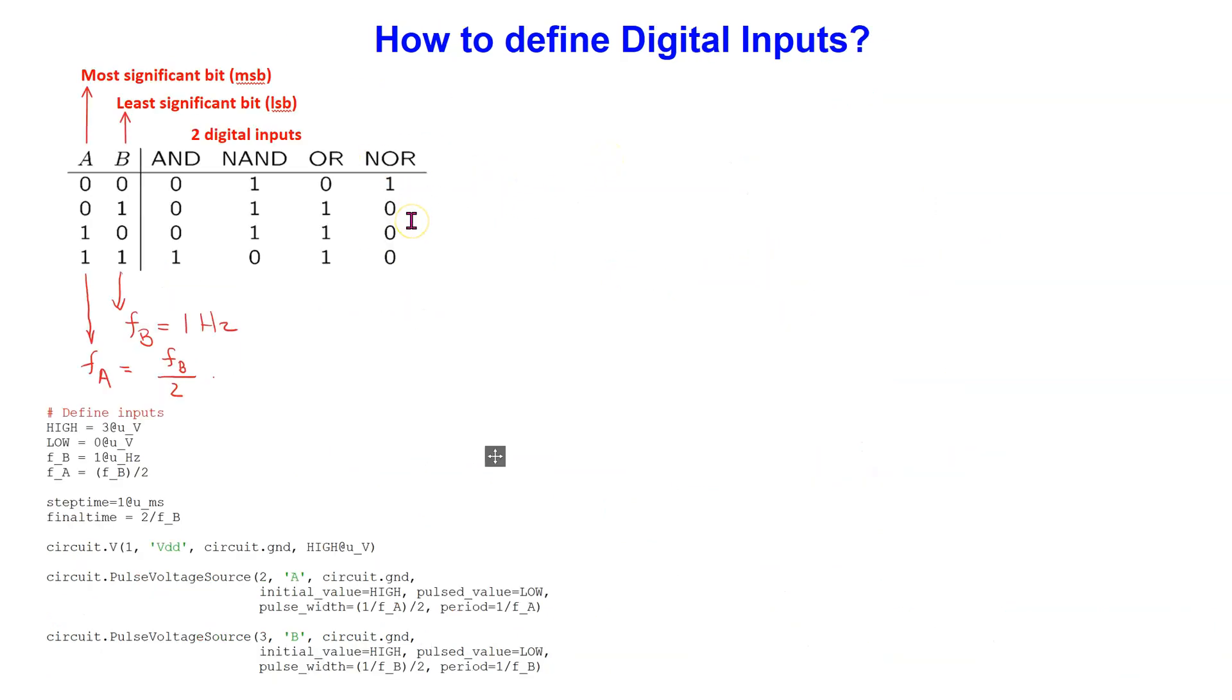For digital logic gates with two or more inputs, we need a systematic way to define the inputs, covering all the rows of the truth table in the correct sequence. From the truth table, we can see that while the least significant bit goes 0101, the most significant bit goes 0011. That is, its frequency is half that of the least significant bit.